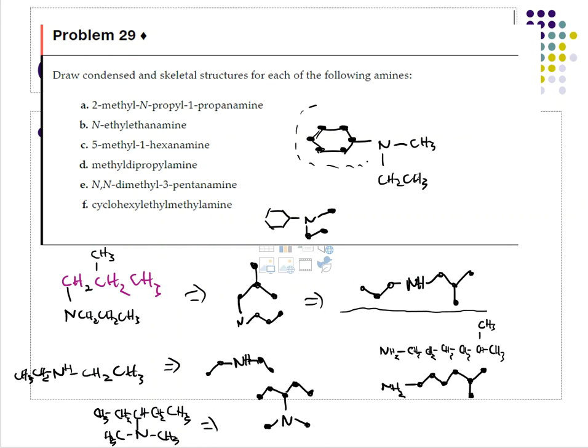Those were example problems going from a name to a structure, which is the reverse of what we've mostly done. We're not quite done with amines and nomenclature yet. In the next video, we'll continue with more examples, looking at structures and coming up with names, for more practice in this game we're calling nomenclature.